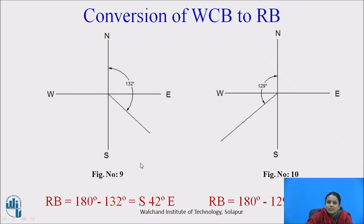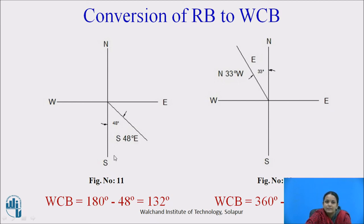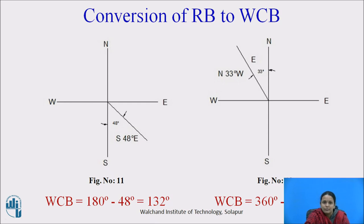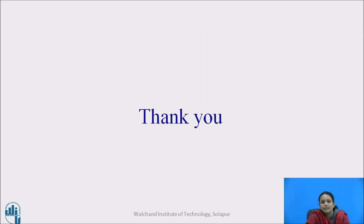For conversion from reduced bearing to whole circle bearing: if the survey line is South 48 degrees East, it makes 48 degrees with respect to the south direction. Converting to whole circle bearing: the total north-south span is 180 degrees, so 180 minus 48 equals 132 degrees from the north direction. Likewise, you can convert between whole circle bearing and reduced bearing systems in both directions. These are the references used for this video for further study. Thank you.